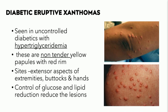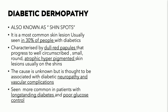Eruptive xanthomas are not uncommon in diabetics, typically in those with uncontrolled hypertriglyceridemia. They present as firm, non-tender, yellowish to yellowish-orange papules and nodules, usually on the extensor surfaces and sometimes the buttocks. These most certainly occur in poorly controlled diabetics who have background hyperlipidemia, specifically hypertriglyceridemia.